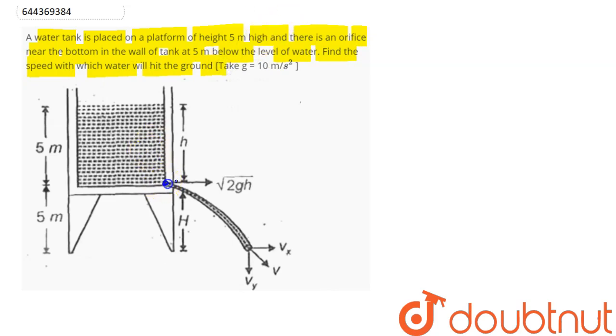We can say the efflux speed, which is equal to √(2gh), equals vx. After this, the water travels in a projectile path. When it lands on the ground,